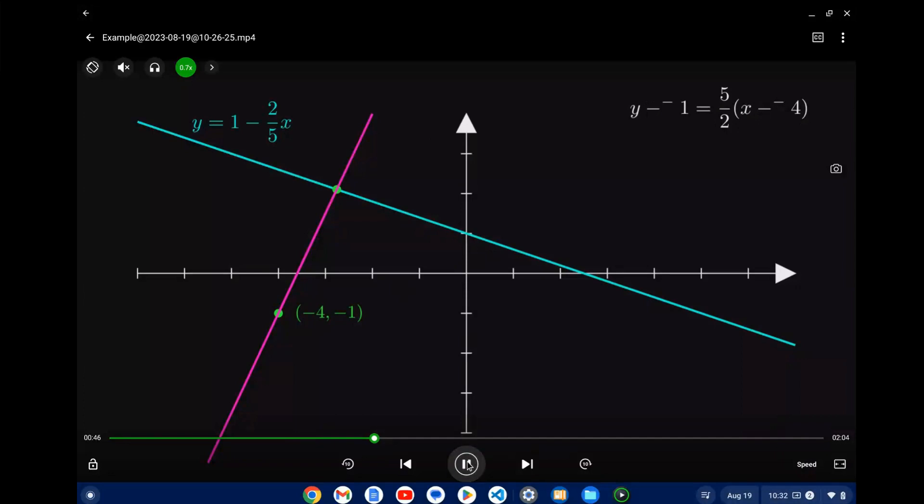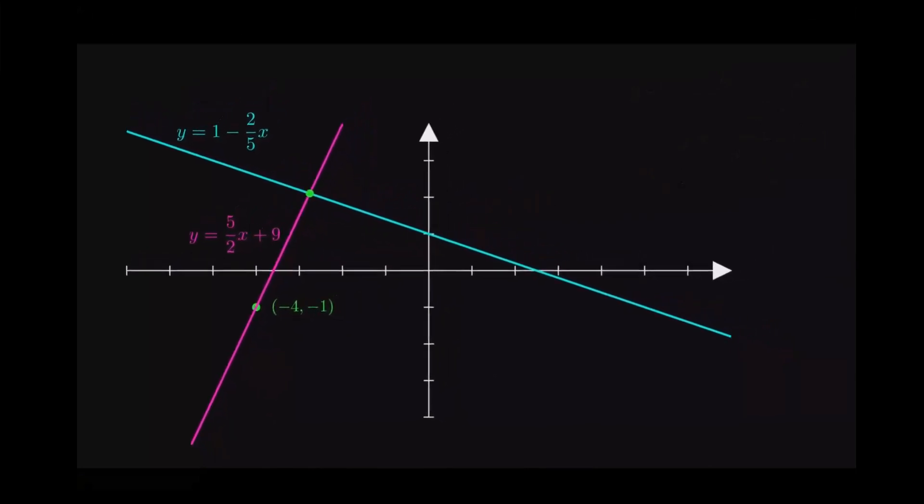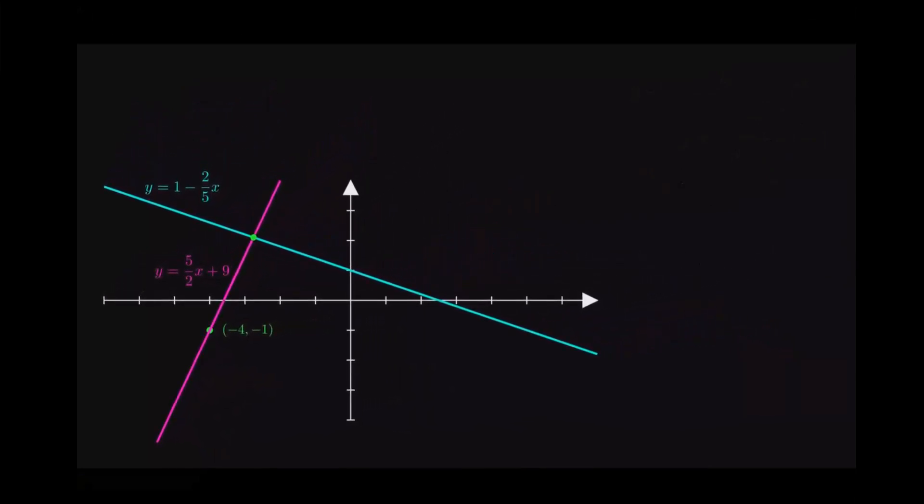Now I'm going to also put this into standard form. So you should go through this algebra on paper, I would suggest, and you should get that. Okay, so we have the equation now of each line, and so to find that point of intersection, all I need to do is set those lines equal to each other. That will give me the point of intersection.